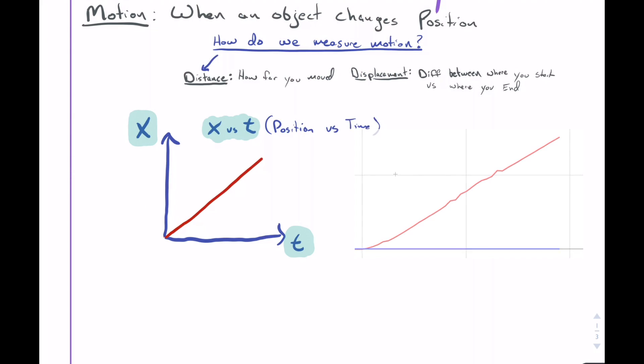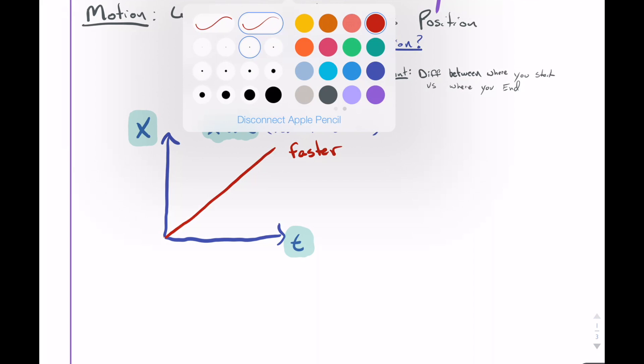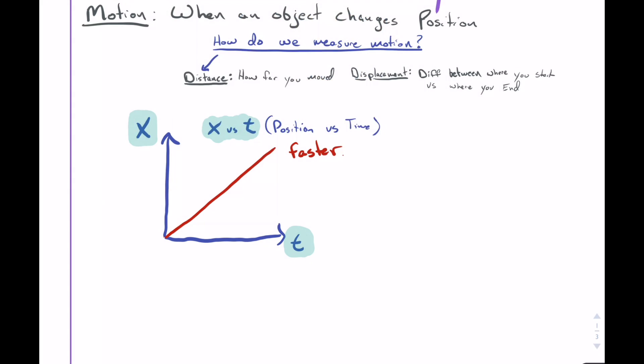I'm going to start out with the red car. What we noticed is the red car started at zero and it went forward like this. Our red car was the faster car. What we noticed about that is it also had a steeper or bigger slope.